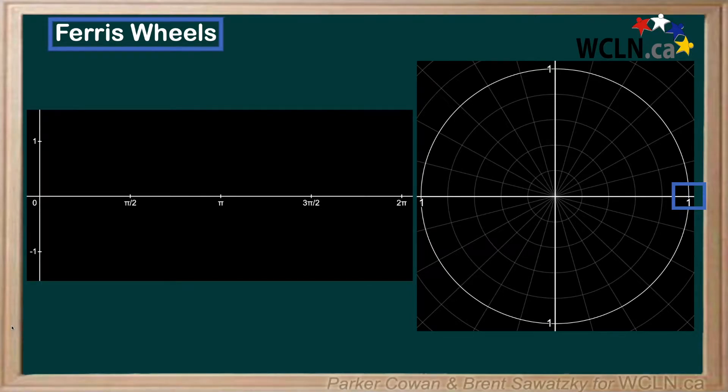Think about the motion of a ferris wheel. If we were a rider on one of the carousels, we could track our motion all the way around the circumference of the ferris wheel. And this would be very similar to how we would rotate our terminal arm around a unit circle.